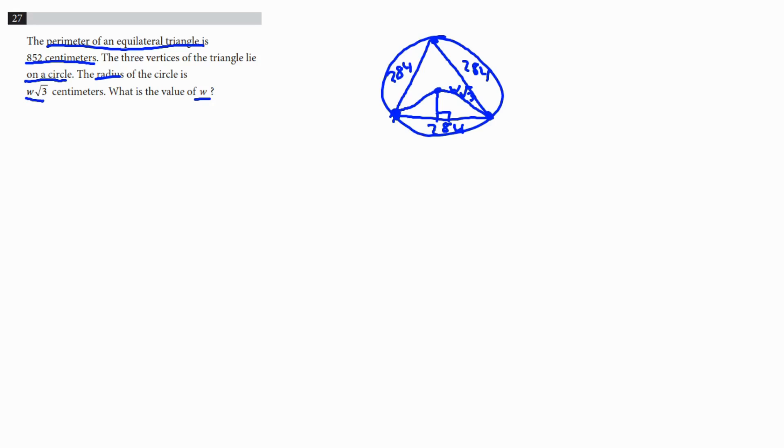So this looks really bad, so I'm going to draw this down here. So we have this right triangle. Let me draw it out. We have W square root of three here, and then we have 284 divided by two because we split that little triangle we made in half. So 284 divided by two, that's going to be 142.